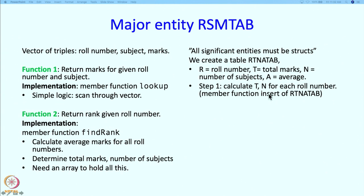The insert function will go over RSM tab and look at triples. For every role number, subject, mark triple, it will go to RTNA tab for that corresponding role number and add the marks into the total T. We do not really need to know the name of the subject — we just need to know how many subjects the student is taking. Since we just added the marks for one subject into T, we will increment N, the number of subjects, by 1. This way we keep accumulating the total marks and total number of subjects as we scan through RSM tab.